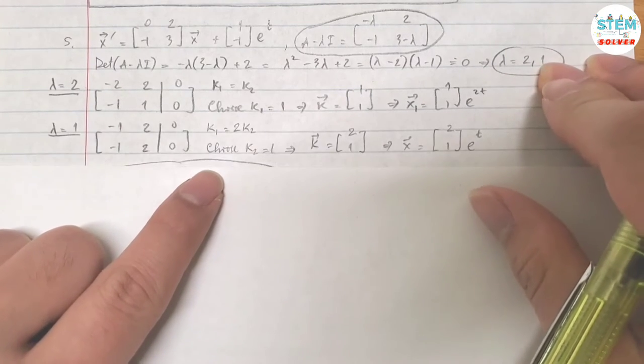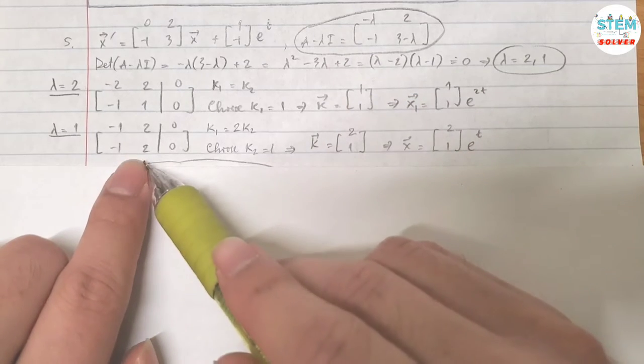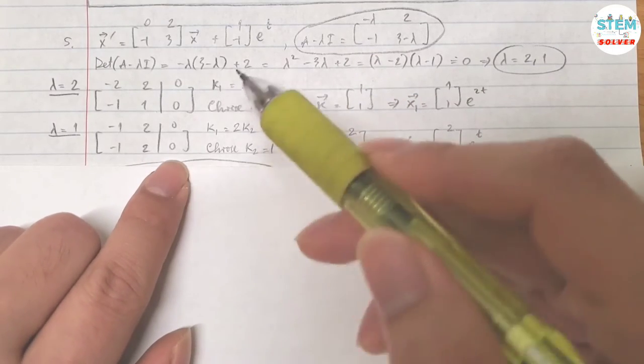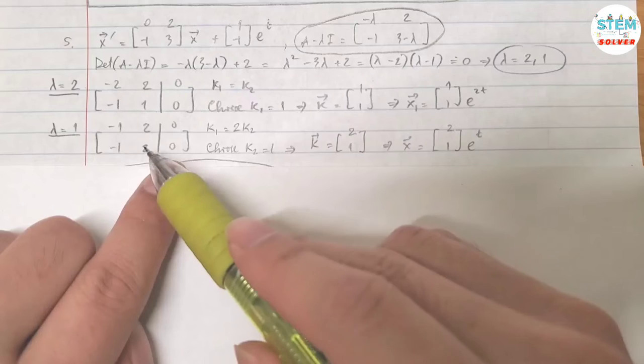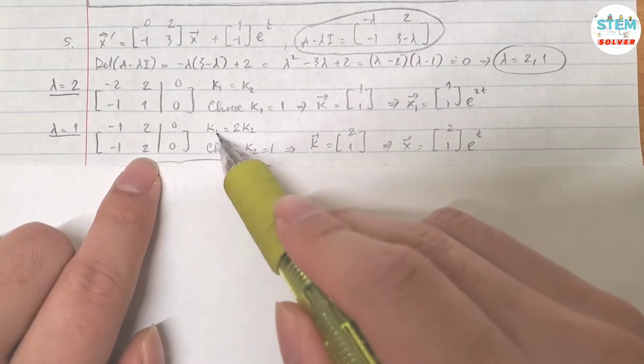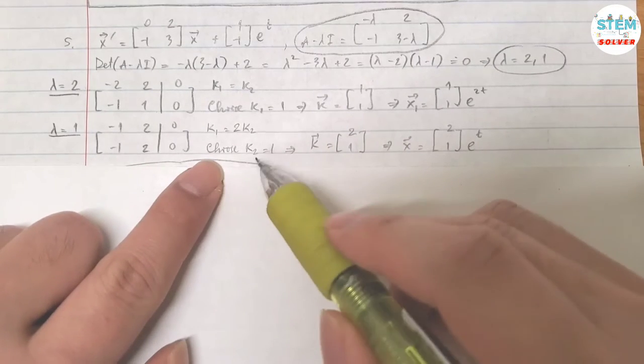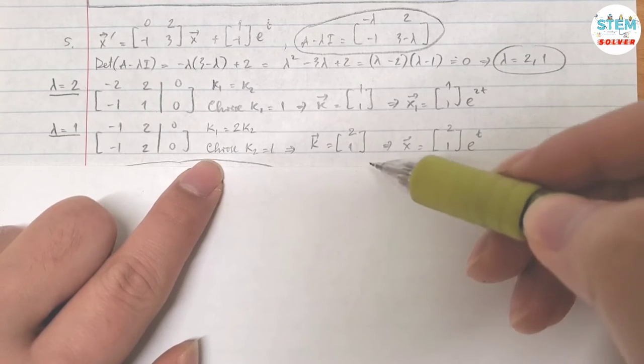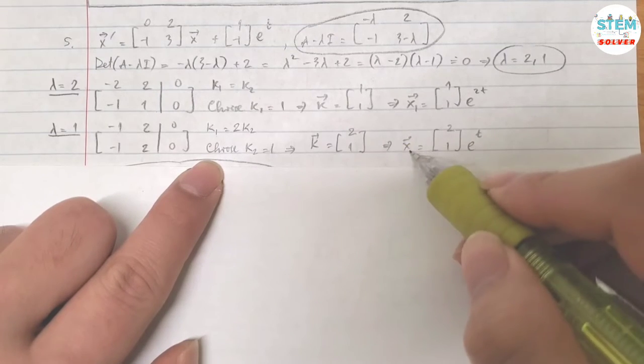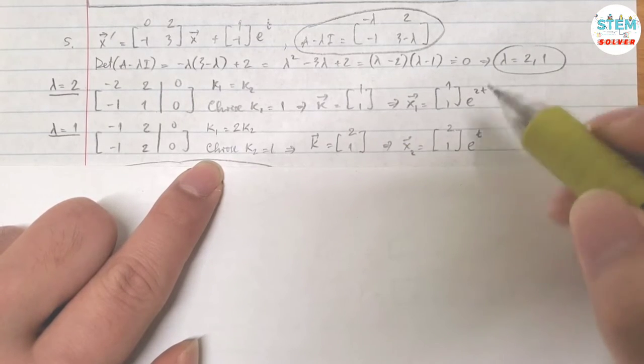For lambda equals 1, plug it into A-lambda-I. That gives me this matrix augmented with 0. Use the first equation. That gives me k1 equals 2k2. Choose k2 equals 1, then k1 is 2. Then vector k is [2, 1], and vector x2 is [2, 1]e^t.